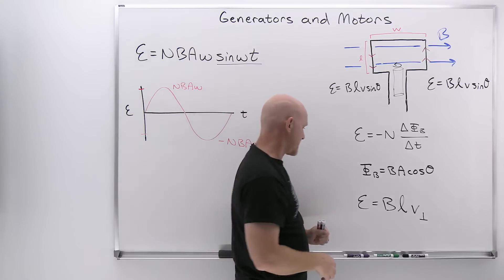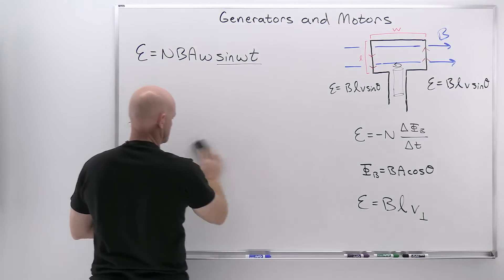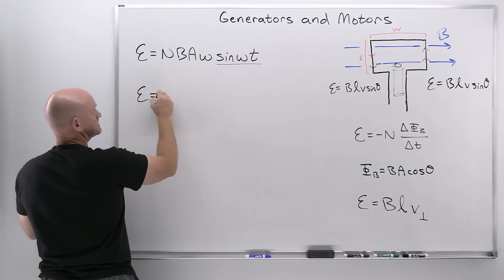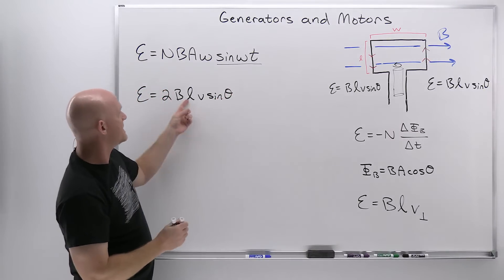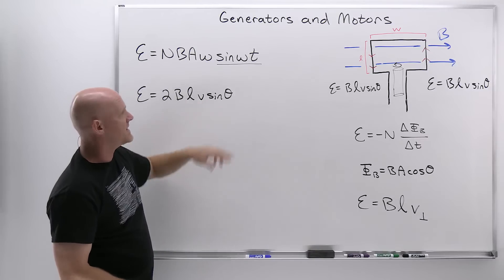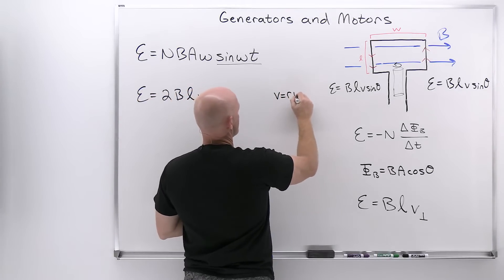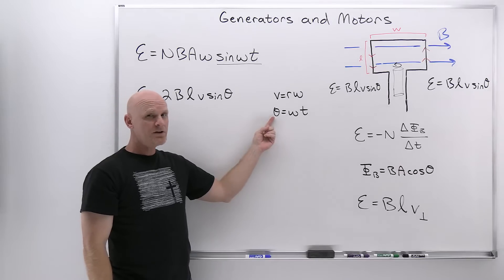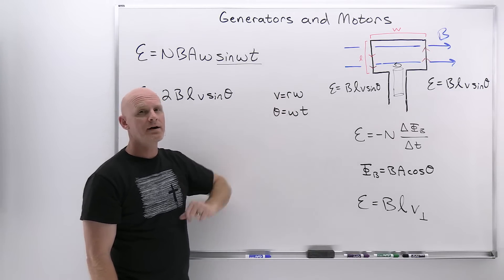The overall EMF then is going to be the sum of these two, which just overall doubles the value. Now there are a couple of substitutions we want to make. The length here is simply the length of that run of cable in the coil. But V and theta have substitutions to make — going back to the chapter on rotational kinematics. V is equal to Rω, and theta is equal to ωt. Displacement equals velocity times time, while angular displacement equals angular velocity times time. The relationship between linear velocity and angular velocity was multiplying by the radius of the motion.